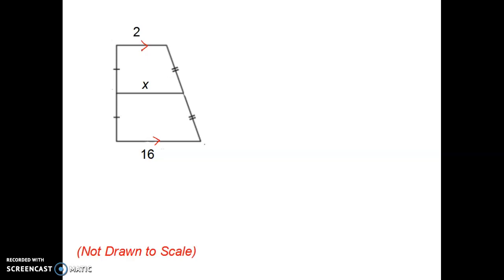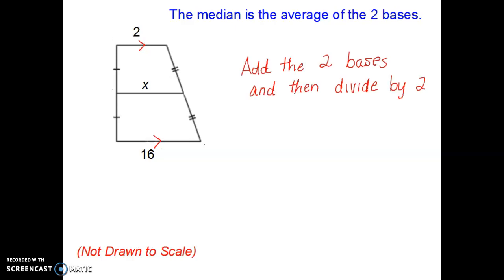What my main objective is would be to find the length of a median if I know the two bases. There is a way to do that, and the length of a median is the average of the two bases. Keep in mind that the bases of a trapezoid are the two parallel sides. So what I would want to do is average those two together.